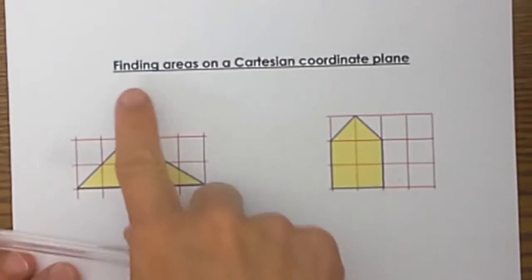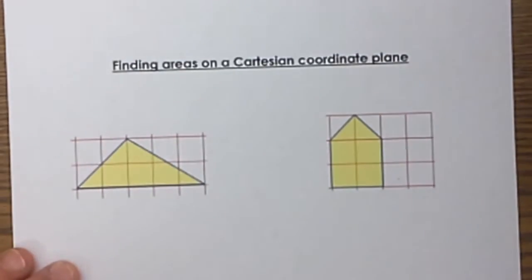Hi and welcome to Moo Moo Math. Today we are going to find areas of figures on a Cartesian coordinate plane. We are going to start with some simple figures.